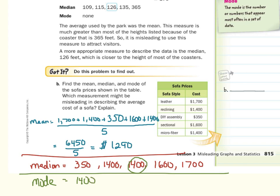So our mean, if we summarize our data, is 1290. Our median, our middle price, is 1400, and our mode is also 1400.